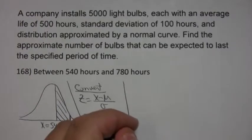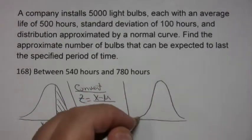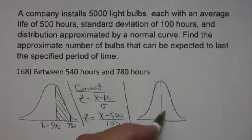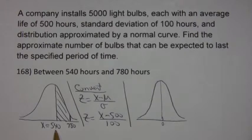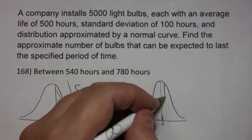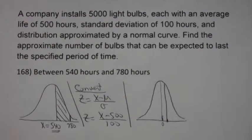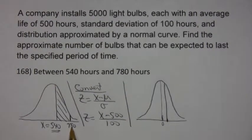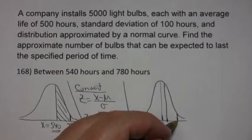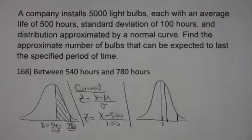And when I convert that, I end up with a standard normal distribution, whose mean of course is 0. But I don't want to go from 0. I want to go something slightly to the right of 0. That number represents the 540 after it's converted to a z, and then another number over here, and that number there is going to be what 780 is after it gets converted.